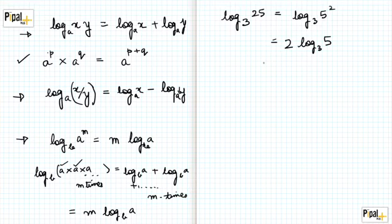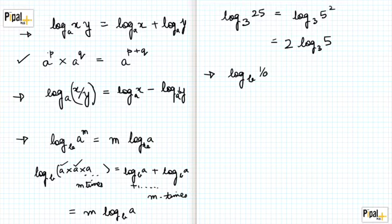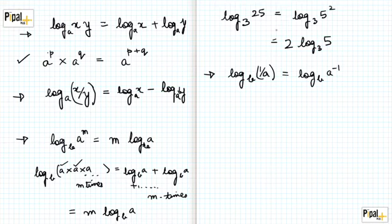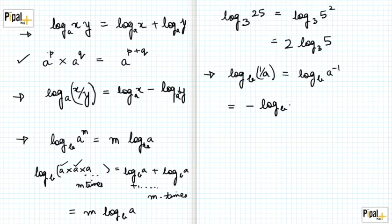Now if we have log base b of 1/a, this equals log base b of a to the power minus 1. Just like before, we can bring the power out — here m is minus 1 — so we get this equivalent to negative log base b of a. So the log of 1/a is the negative of the log of a.